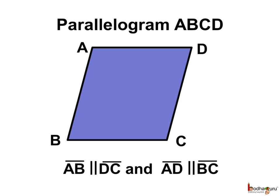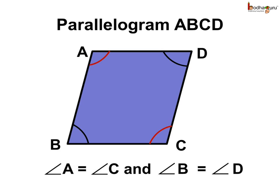Line segment AB is parallel to DC and line segment AD is parallel to BC. Also, the opposite angles are equal — angle A is equal to angle C, and angle B is equal to angle D.